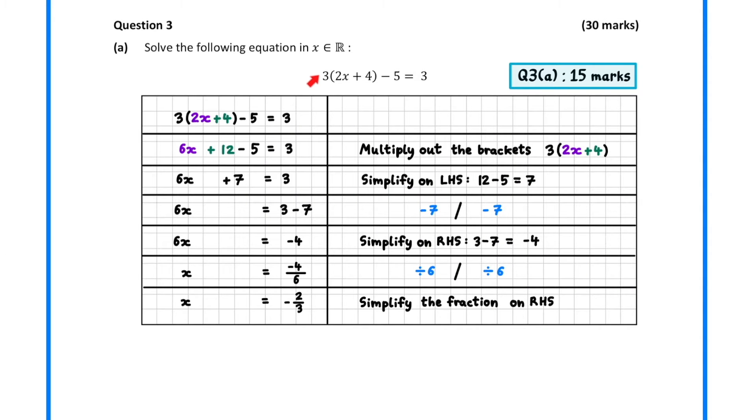In 3a, we must solve an equation for x. First, we multiply out the brackets. 3 times 2x is 6x, and 3 times 4 is 12. Next, we can simplify the 12 minus 5 to 7. Then we subtract 7 from both sides, simplify the right-hand side, divide both sides by 6, and simplify the fraction on the right-hand side.